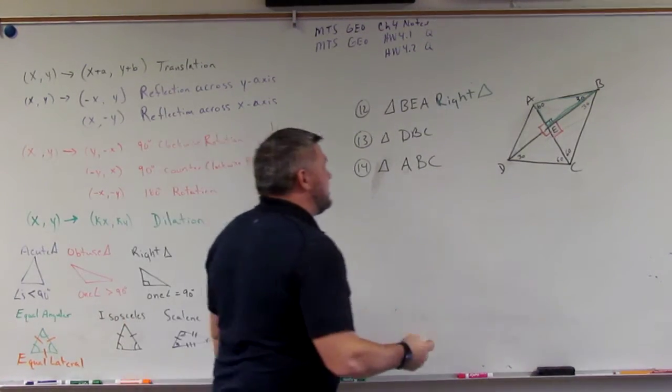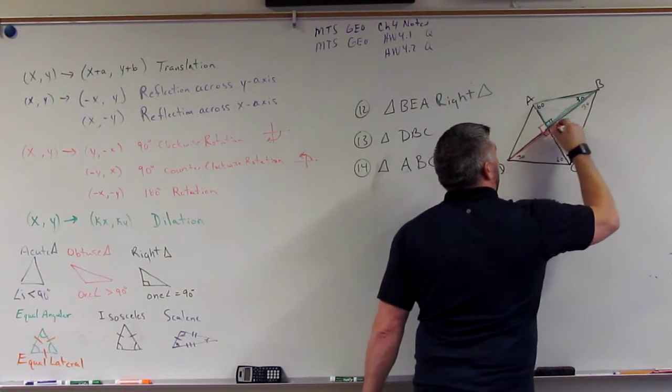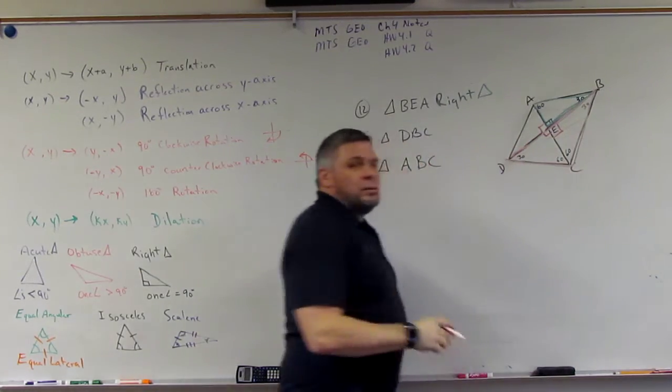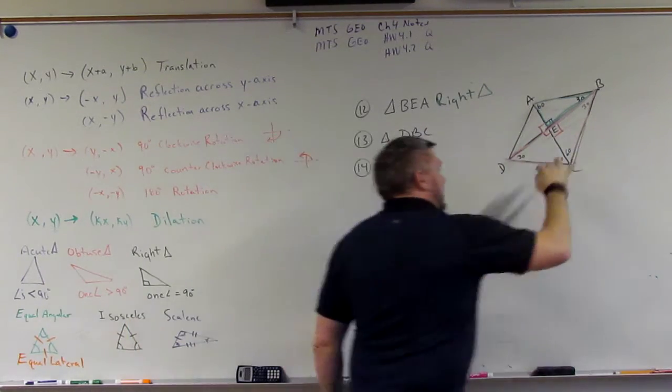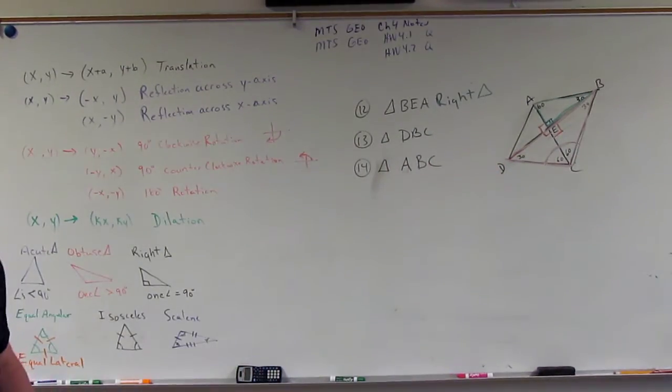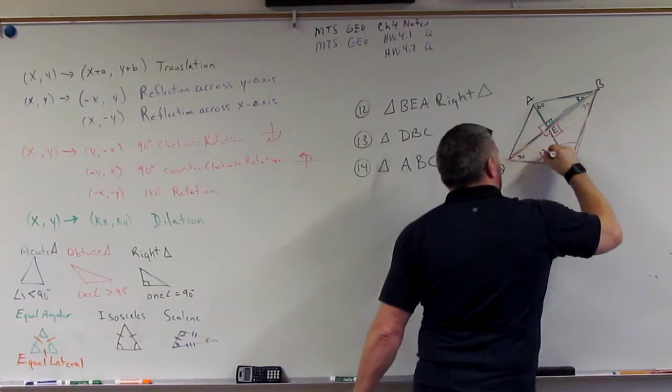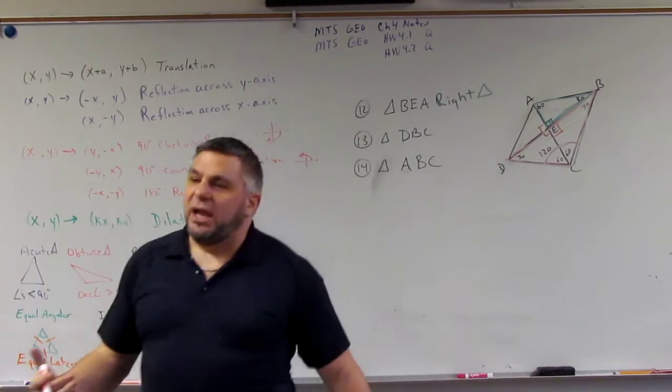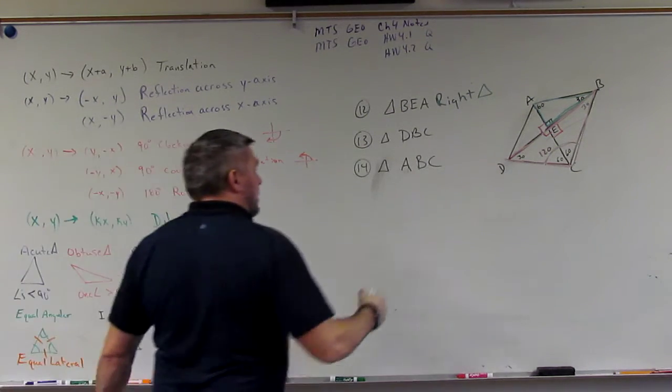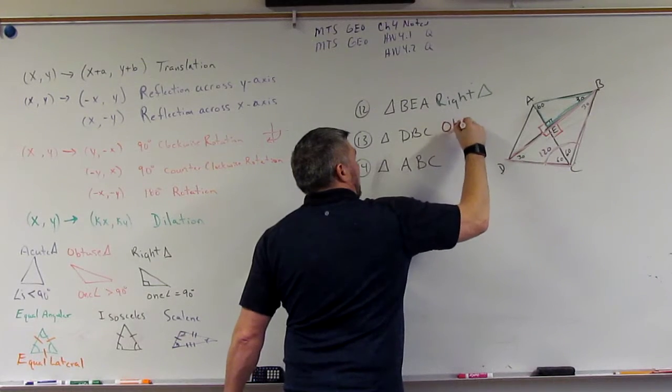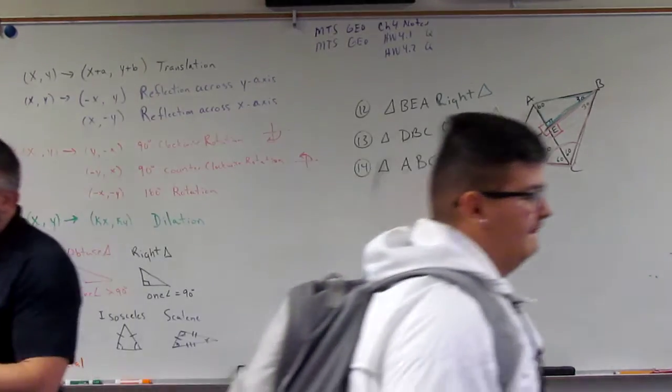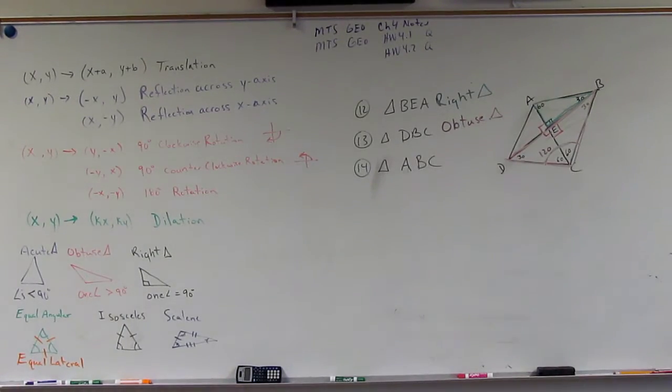Okay. Next, they want DBC. They want D, B, C. So, they want this guy. How big is this? If it's 60 and 60, how big is it? 120. Okay. So, is that bigger than 90? What do we call a triangle with an angle bigger than 90? Obtuse.